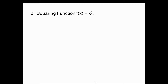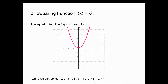Our second basic function: the squaring function, f(x) = x². This is the basic parabola — we've seen it before and we'll see it again in Chapter 3. I plotted the points (0, 0), (−1, 1), (1, 1), (2, 4), and (−2, 4). We will study the squaring function in more detail in Chapter 3 — that's really what Chapter 3 is all about: squared functions.